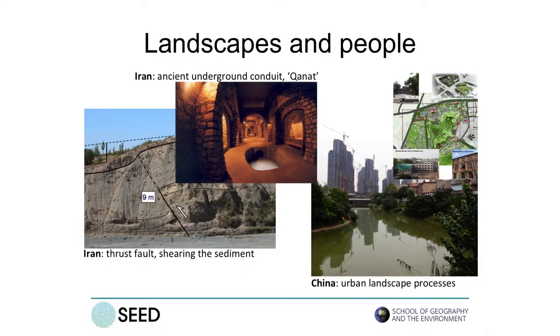An example of that is this lovely work looking at tectonic — the geological controls on groundwater and the way the aquifers were used in Iran over 5,000 years ago, channelling this water for human use and the effect of tectonics on the ability to do that. We also look at urban landscapes — some nice work going on looking at environmental conditions in Beijing.